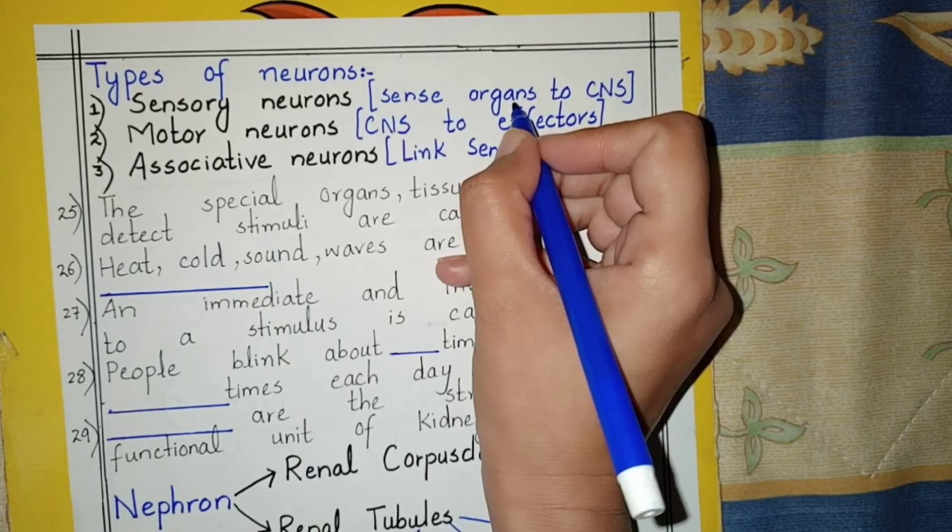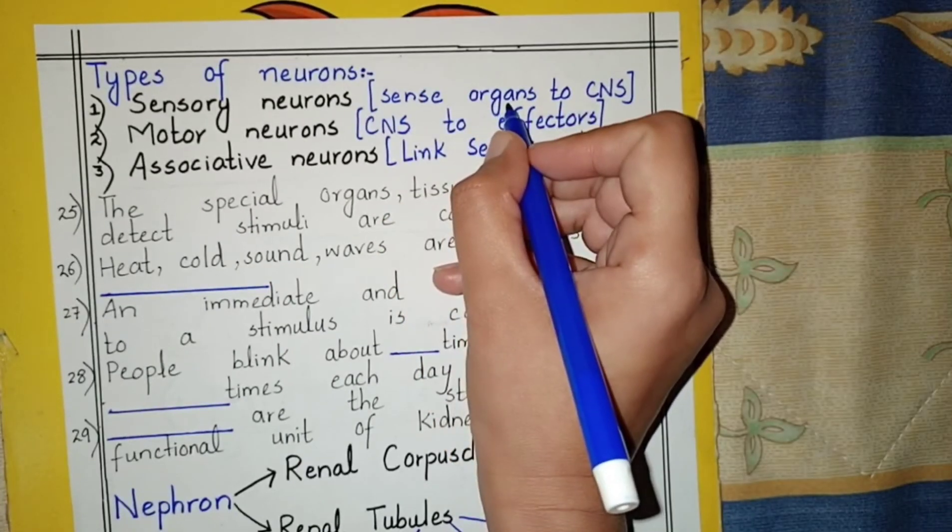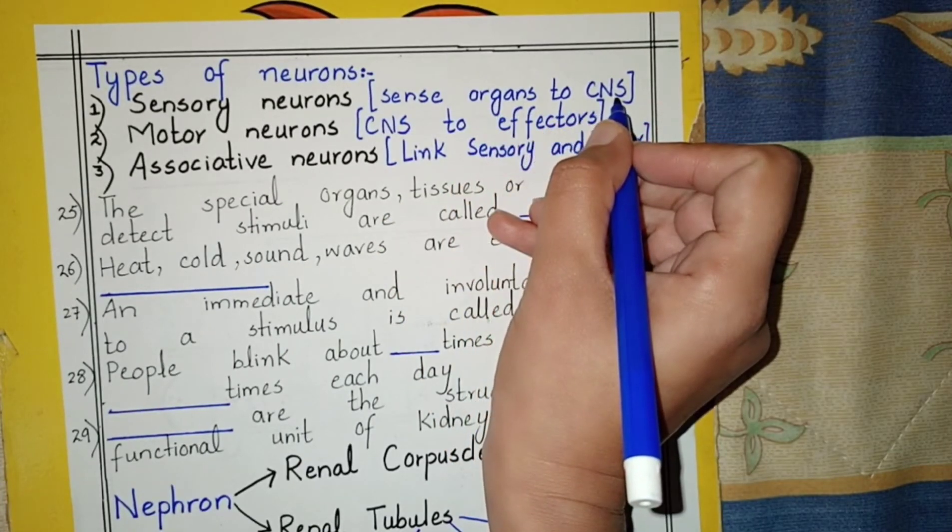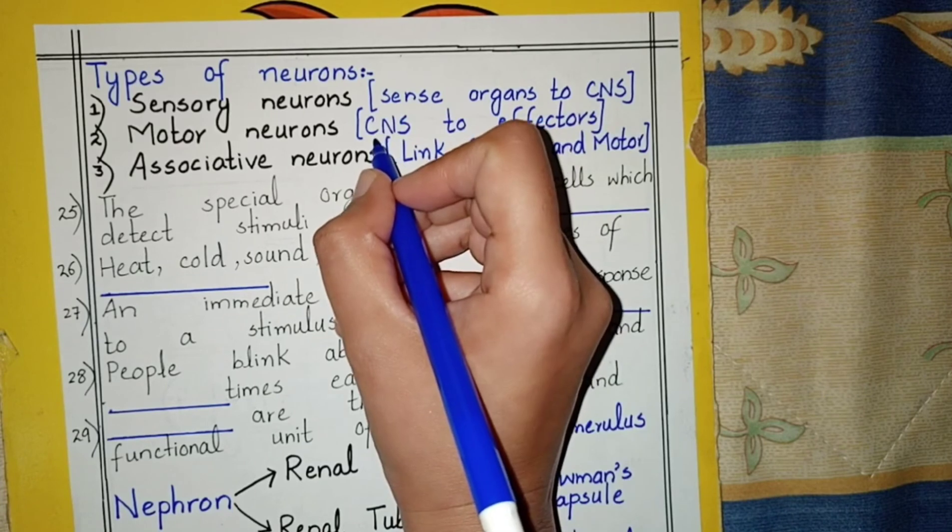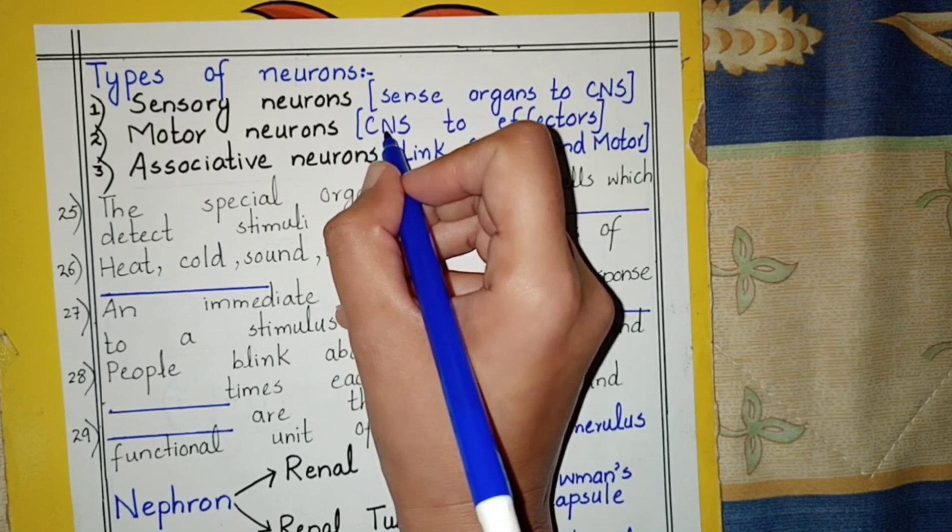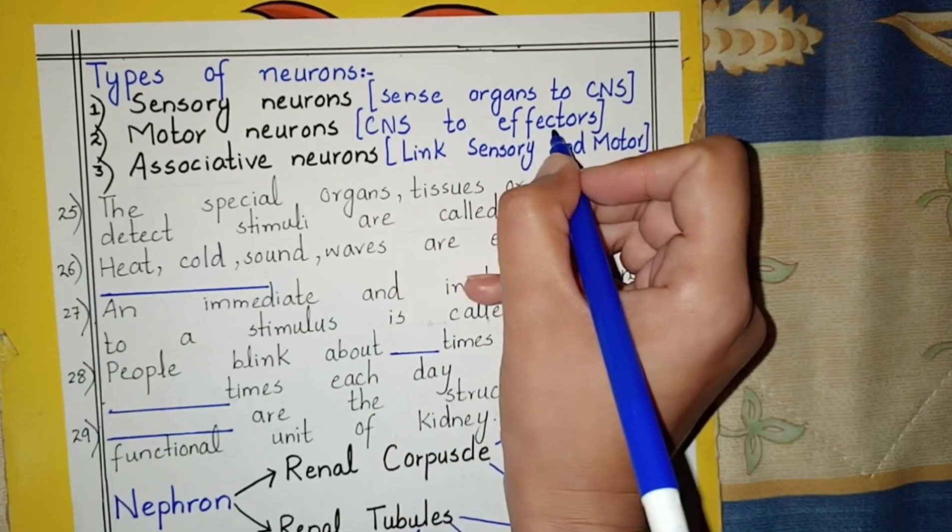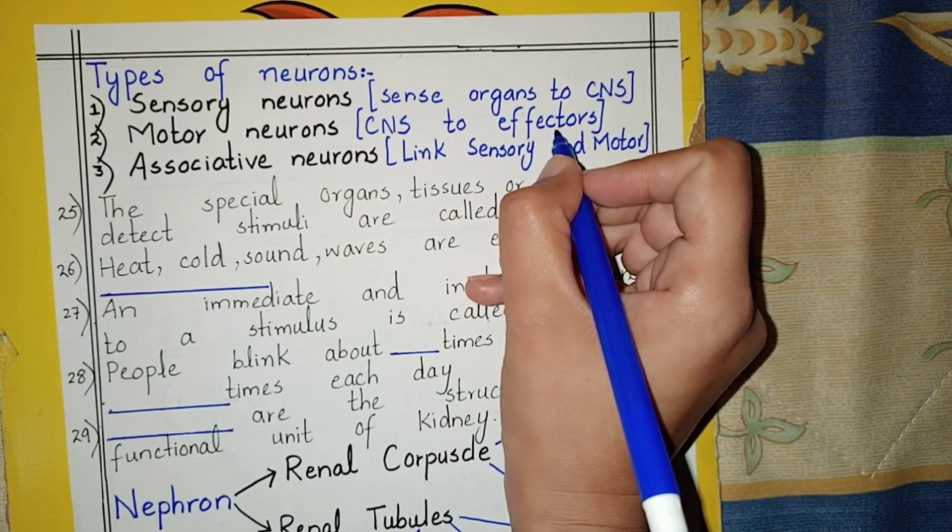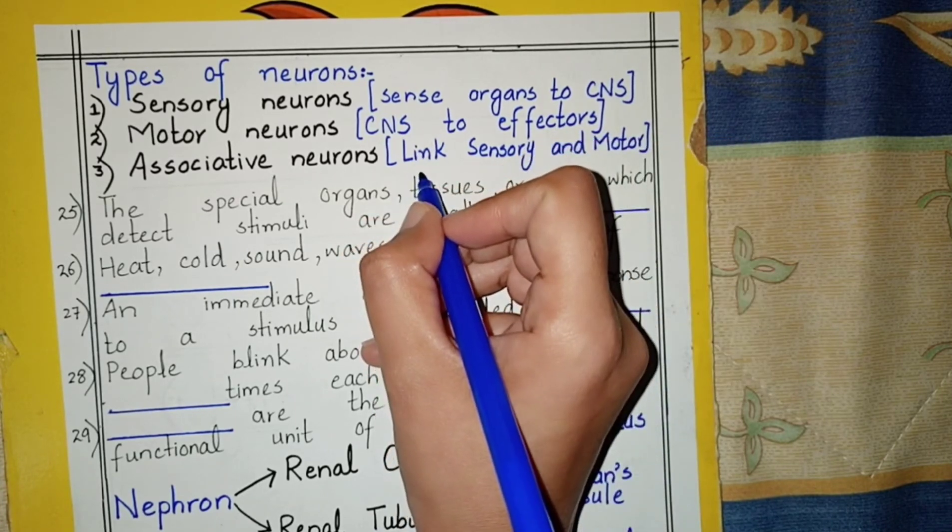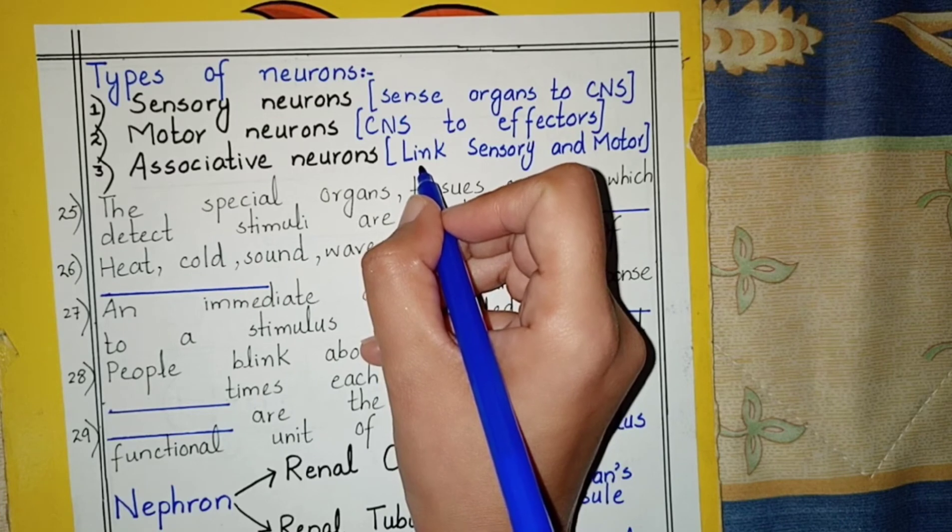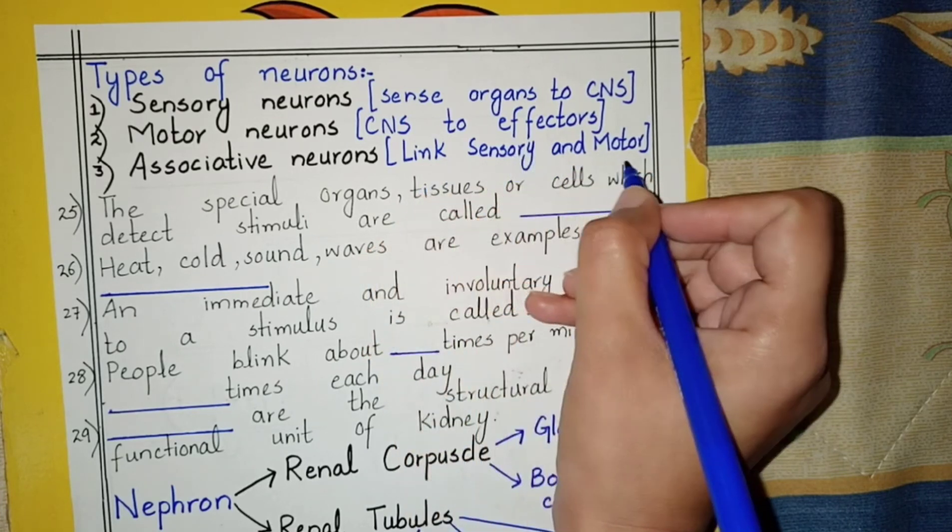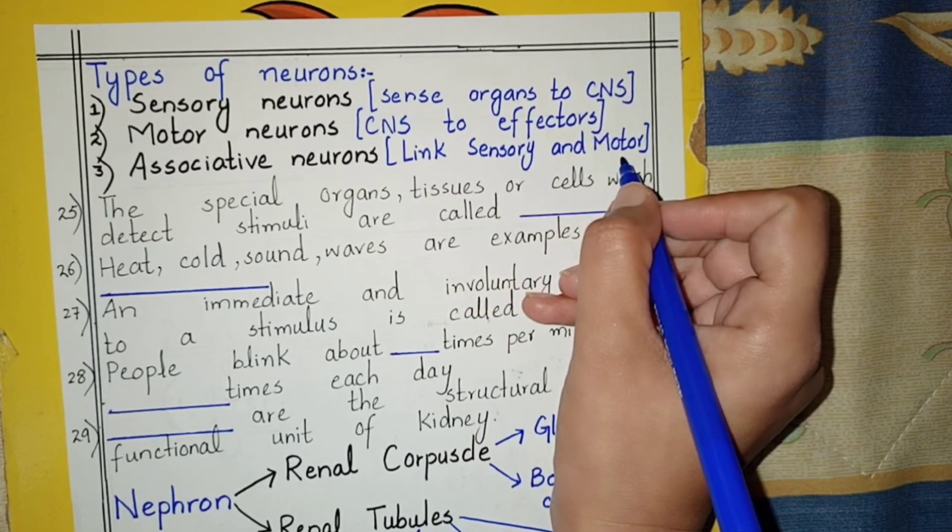Sensory neurons give messages from sense organs to the central nervous system. Motor neurons give messages from the central nervous system to effectors. Effector is that part which is affected. Associative neurons give messages between sensory neurons and motor neurons.